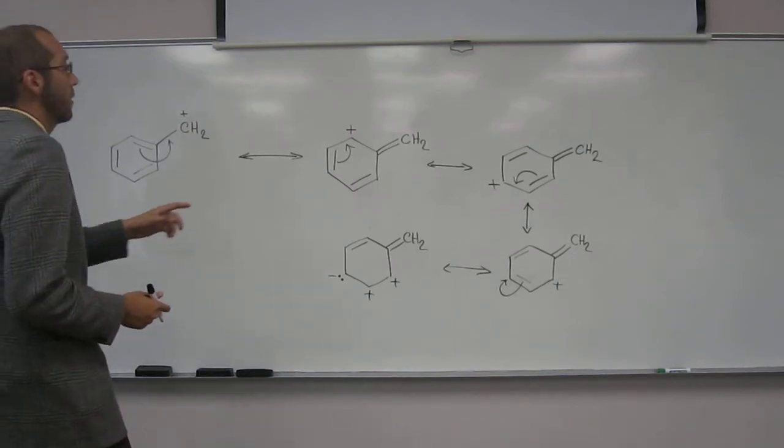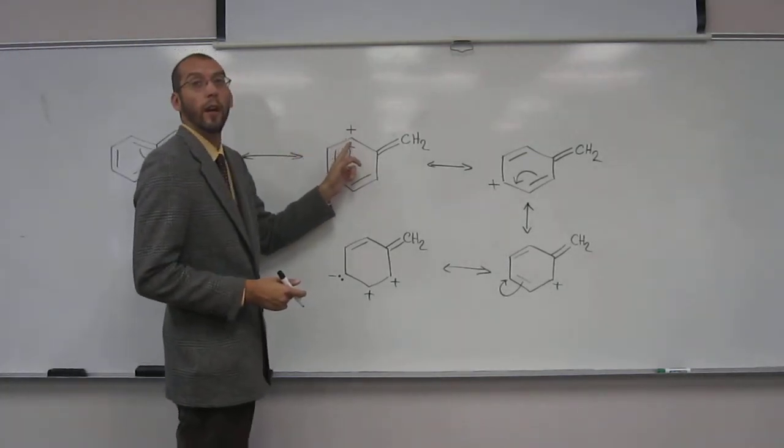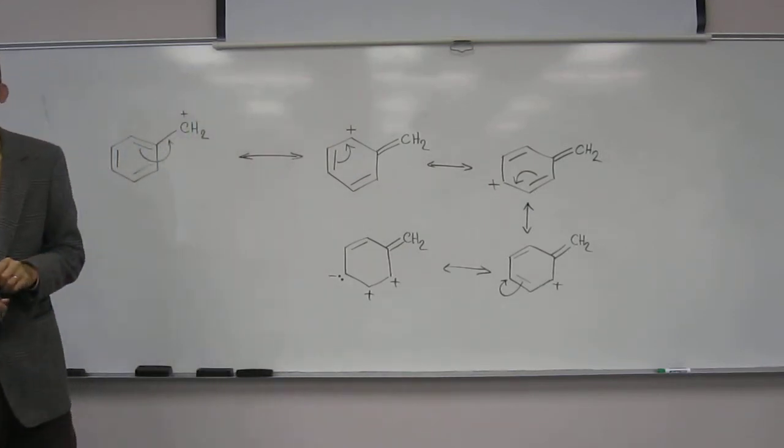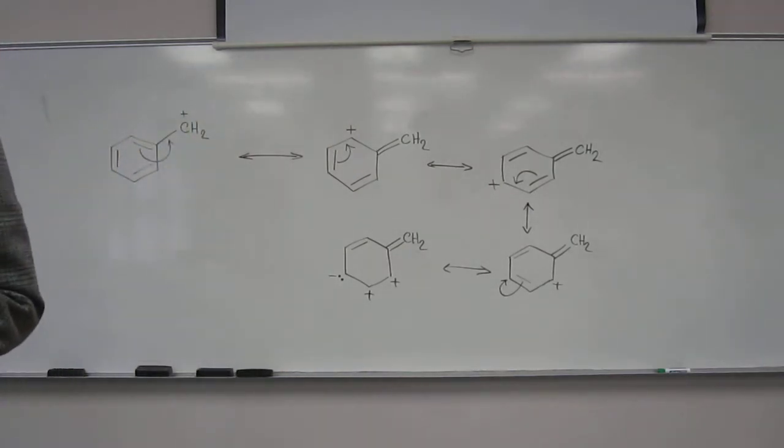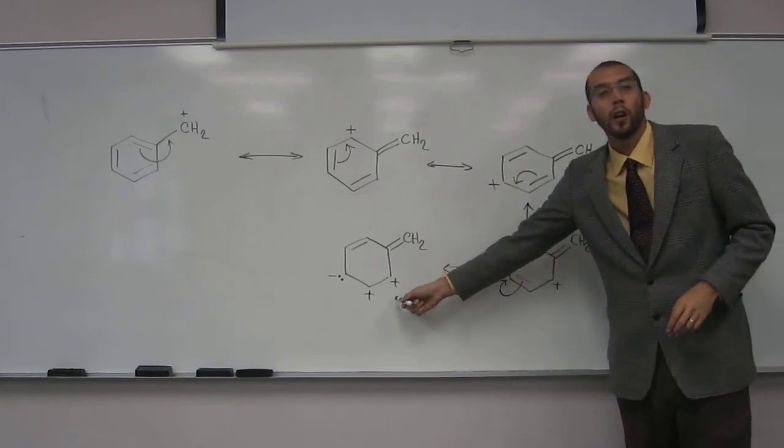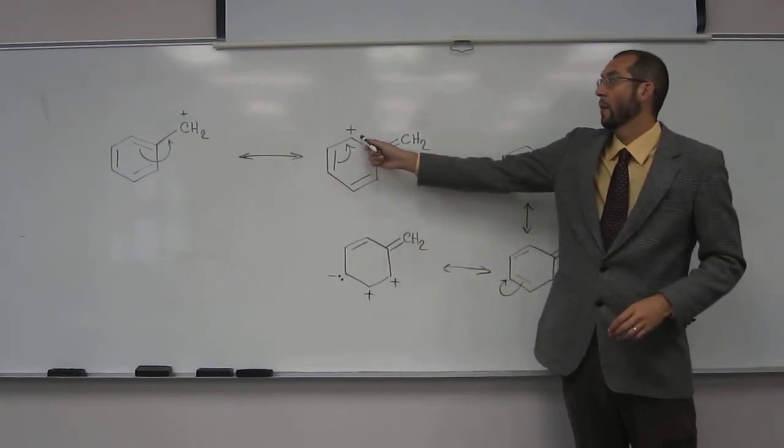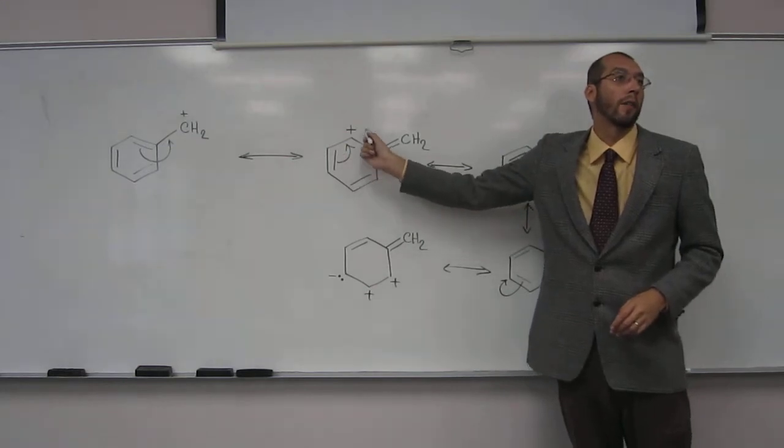I would say that the ones with the positive charge within the ring to be the more major ones. The reason being is because carbocations that have more carbons associated with them, so like a tertiary carbocation is more stable than a secondary, which is more stable than a primary, because carbon has more electron density to donate than hydrogen does. So, since there's two carbons here, that's going to be more stable than just the one carbon being donated.